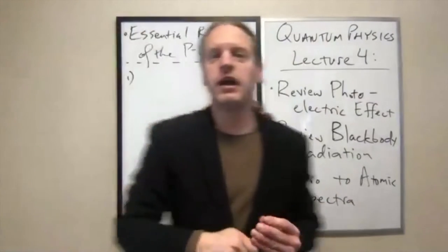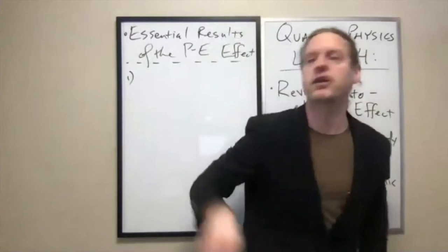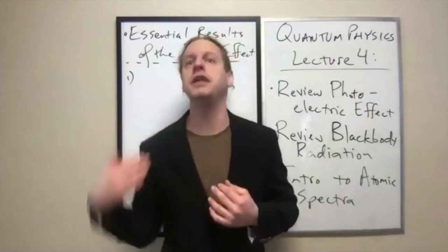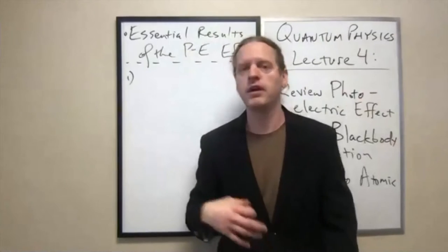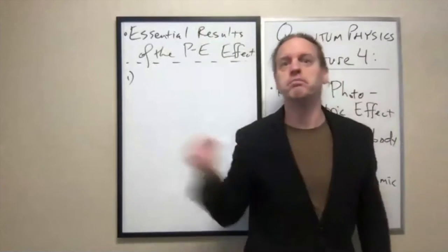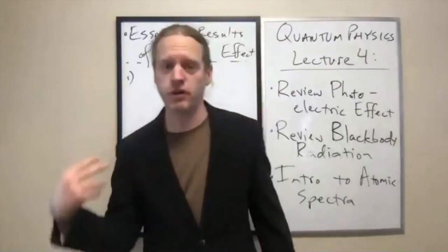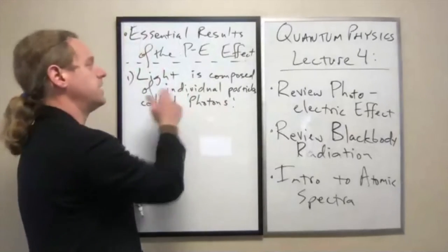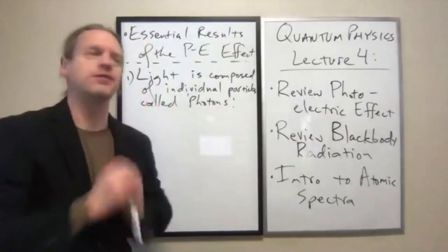So statement number one: light is, in fact, not a continuous wave. It is a bunch of individual particles, and we call those particles photons. Unlike Maxwell's view and the pre-quantum view that light is a continuous stream of energy, we now can physically talk about it as a packet of energy with a given wavelength that moves as a single bundle of energy. Light is composed of individual, discrete, indivisible packets called photons.